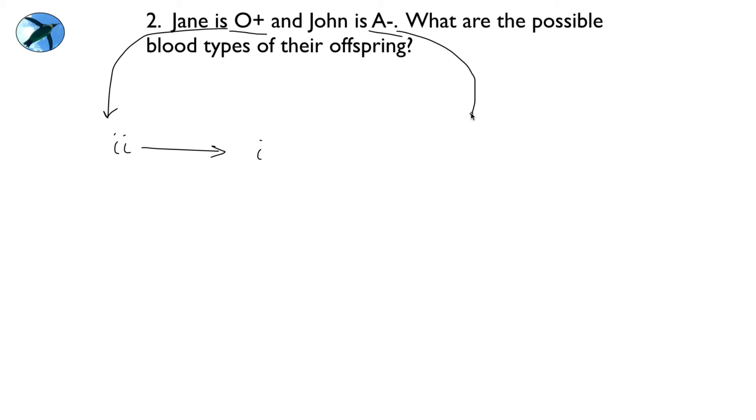John, on the other hand, being A, well, hopefully you recall there are two ways that he could be A. He could either be homozygous for A. If that's the case, all of his sperm would be A. But it's also possible that John is heterozygous for A, in which case 50% of his sperm would give you this A, just like this one, but 50% of his sperm would give you a little i.